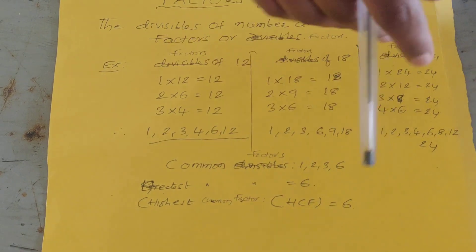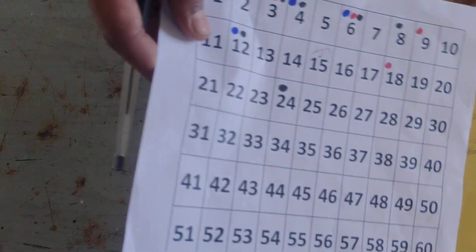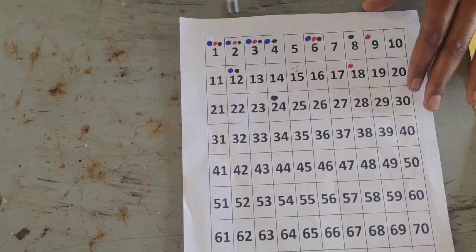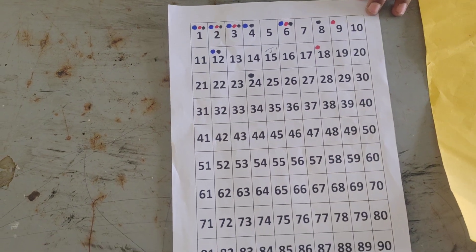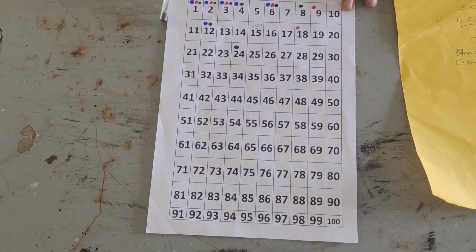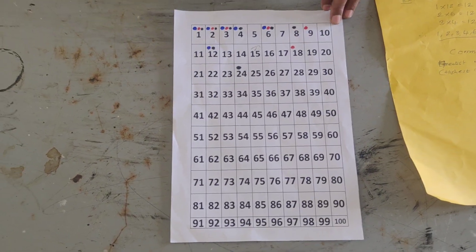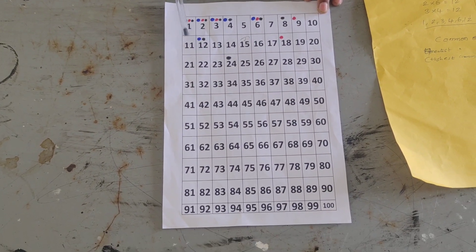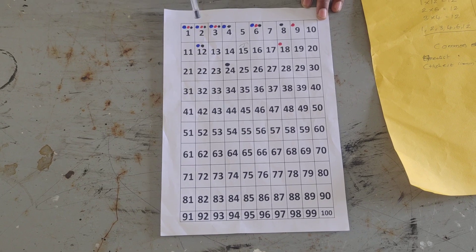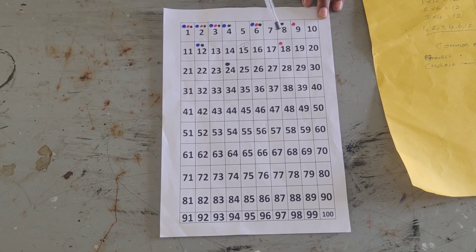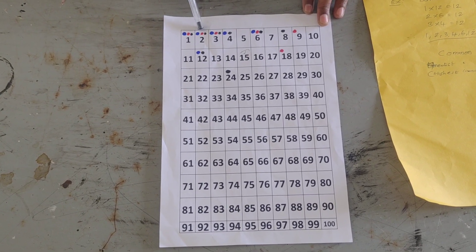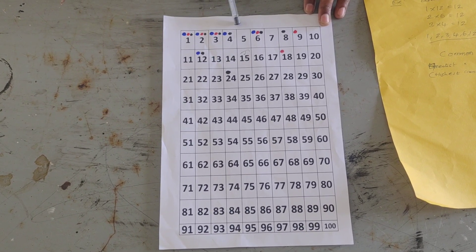This we can also prove by an activity. Let us see it. Here we have taken an A4 size paper and printed numbers up to 100. We marked the factors of 12 with blue, and the factors of 18 with red, and the factors of 24 with black.